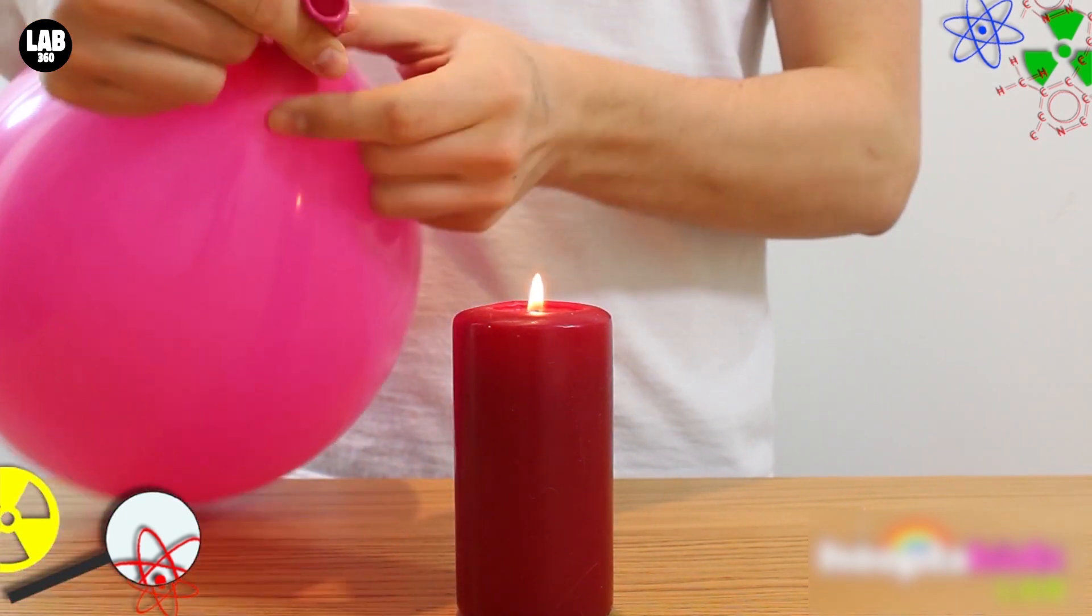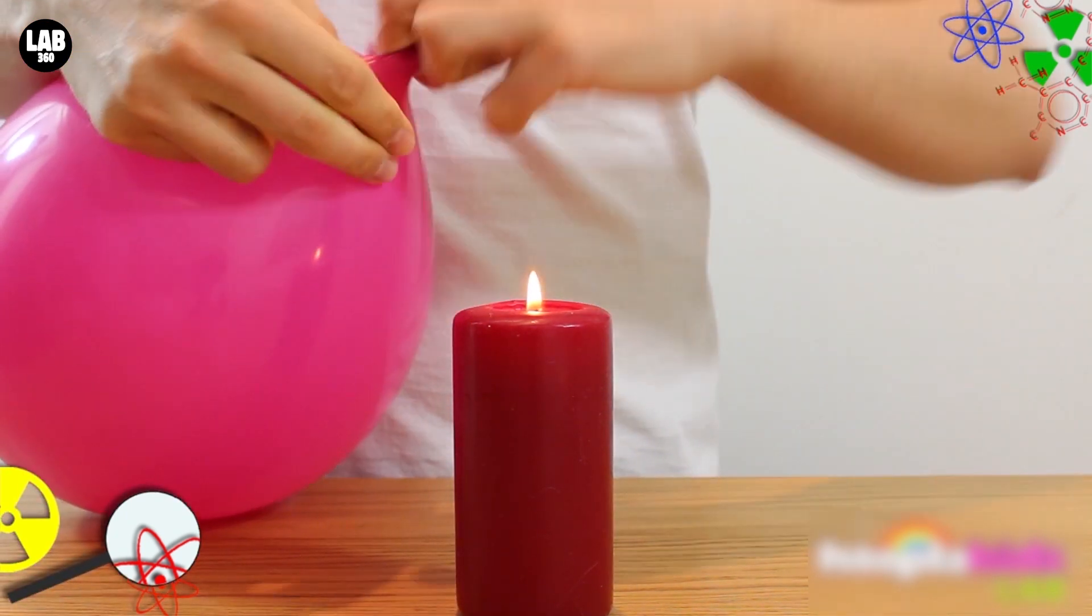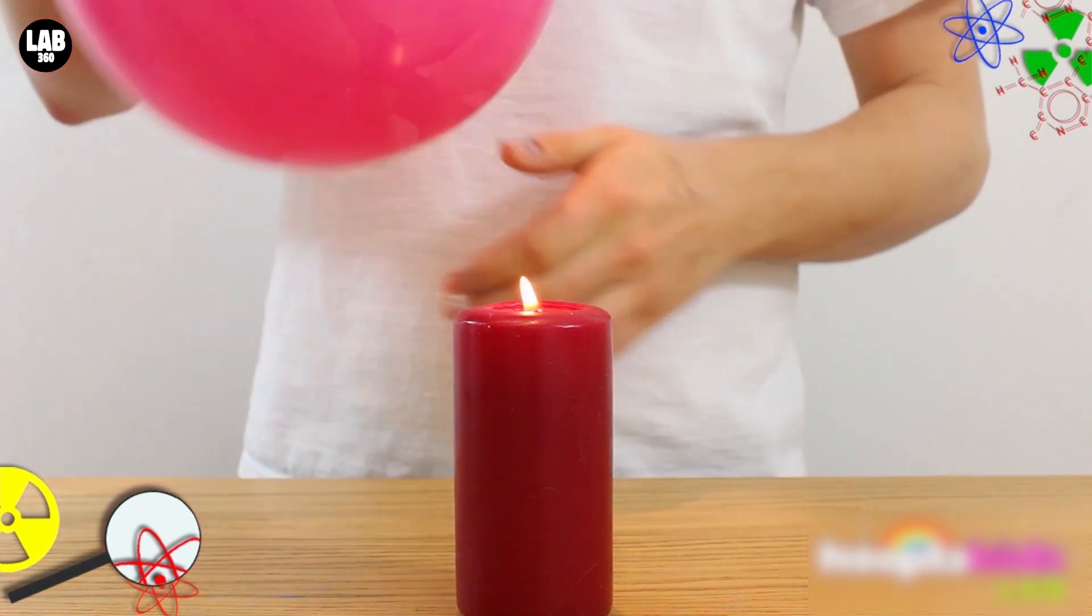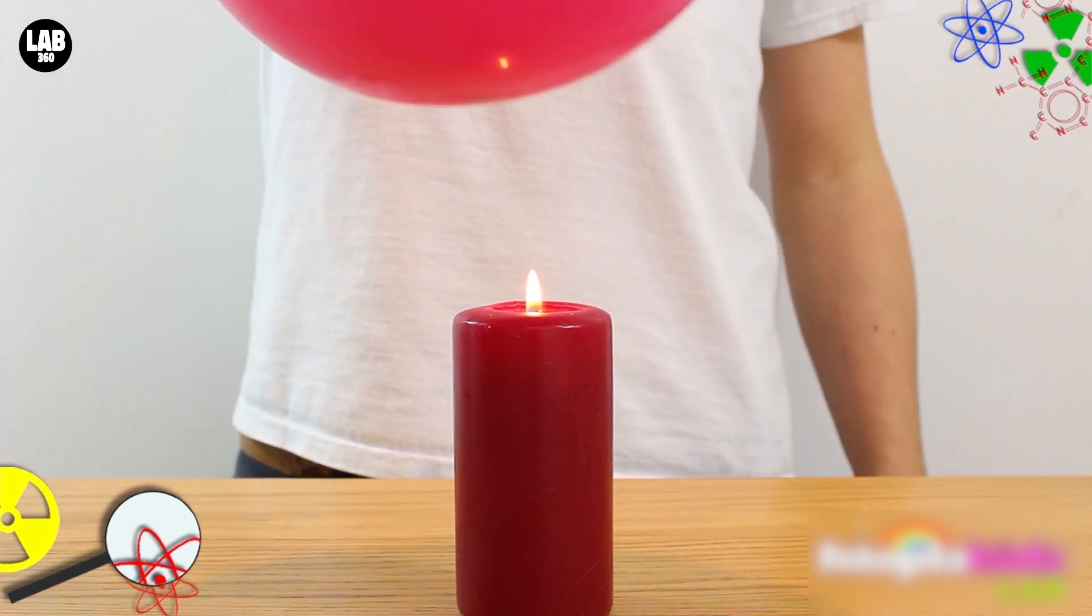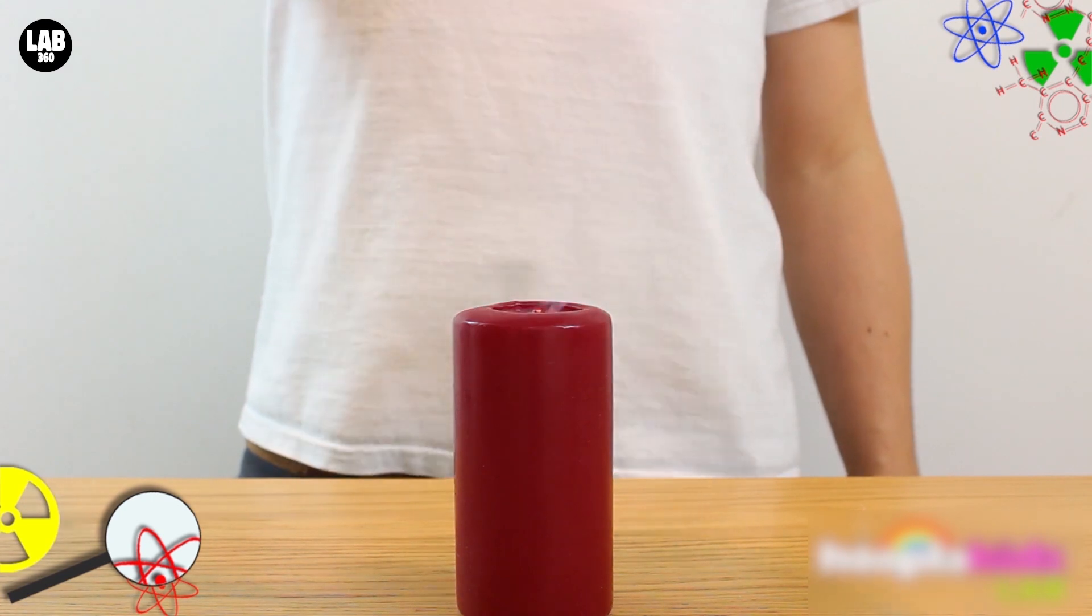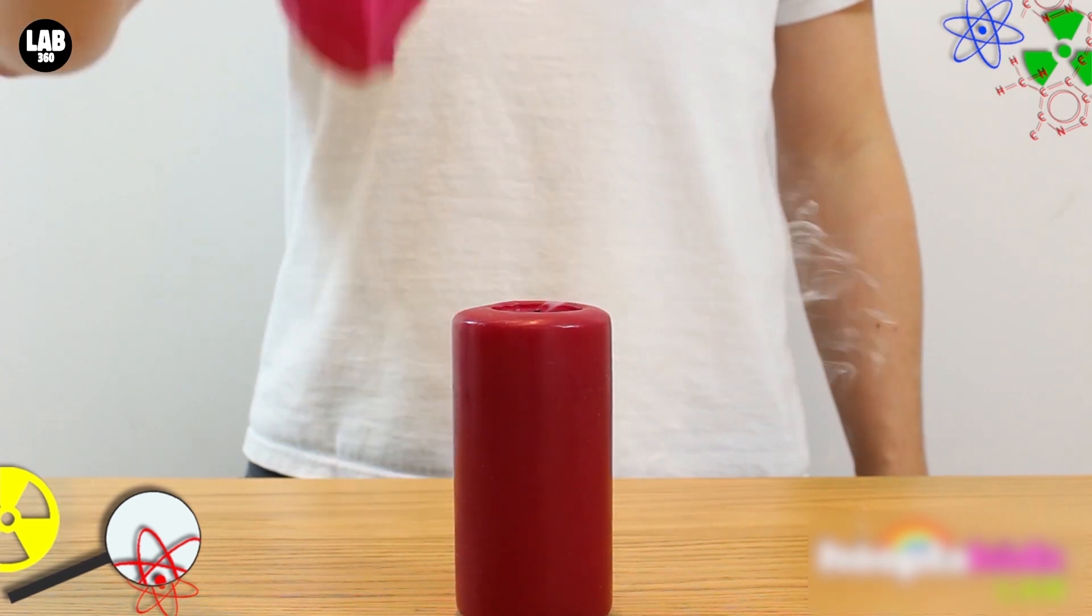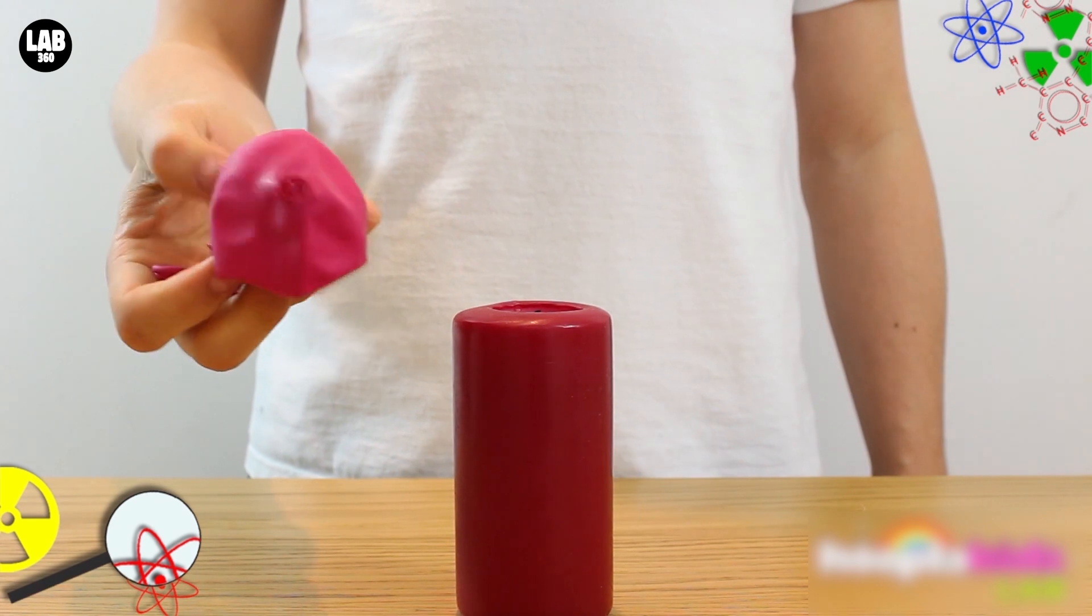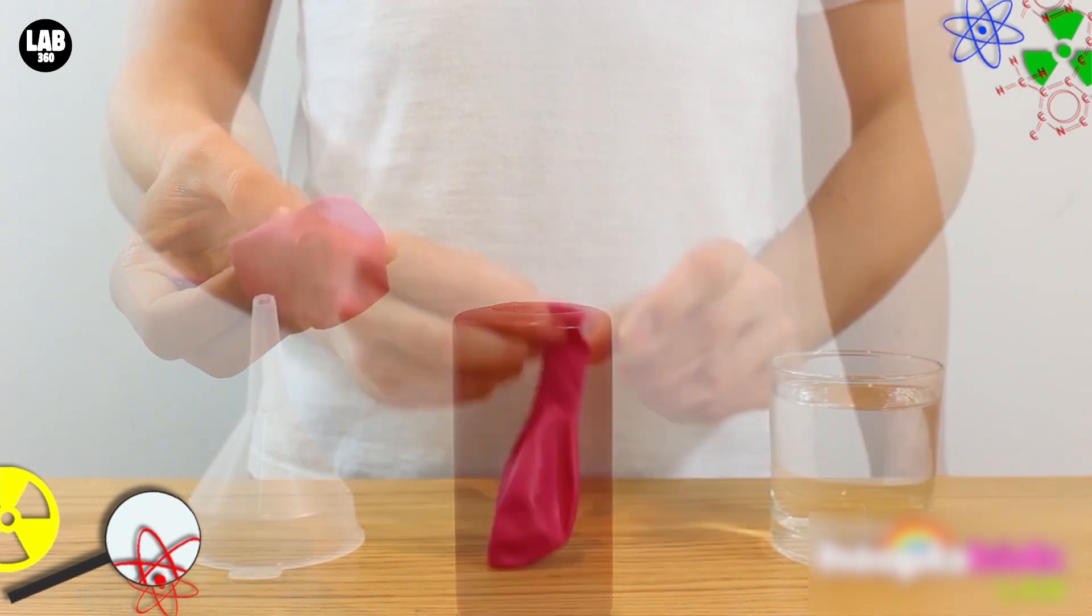The next step is to blow up a balloon, carefully tie off the end to make sure no air escapes, and hold the balloon carefully just above the tip of the flame. As you lower it down, you'll see that the heat from the flame pops the balloon and the force of that air escaping actually blows the candle out.